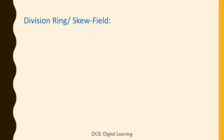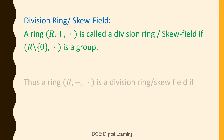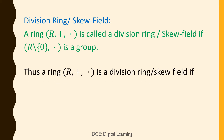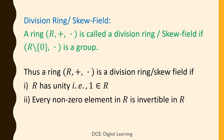Definition of division ring or skew field. A ring R (plus, dot) is called a division ring or skew field if the non-zero elements of R form a group with respect to multiplication. Thus, a ring R (plus, dot) is a division ring or skew field if R has unity, i.e., 1 belongs to R, and every non-zero element in R is invertible in R.